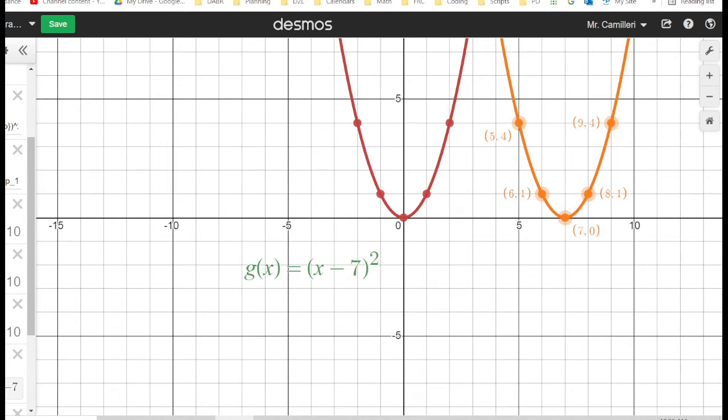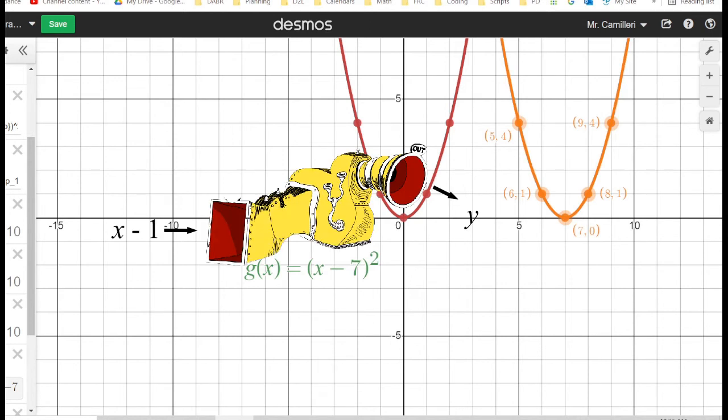Before the input is given to our function machine, which squares the value, it is being subtracted by a number. So the x, or the input to the machine, is different. And we want to think about how that changes the y value that comes out of the machine.